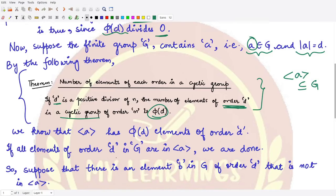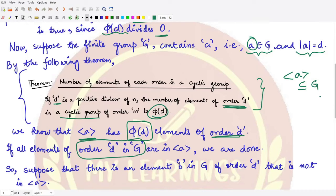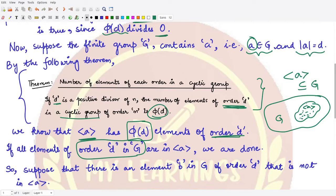Therefore, the group generated by a has φ(d) elements of order d, according to the previous result. Now, if all the elements of order d present in G are contained within the subgroup generated by a, then we have φ(d) such elements and nothing more is required. However, if there exists some other element b in G which also has order d, we consider that case next.